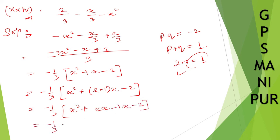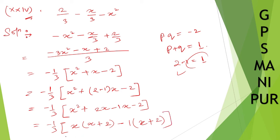So minus 1 by 3 times (x squared plus 2x minus x minus 2). Take x common from the first two: x(x plus 2). Take minus 1 common from the last two: minus 1(x minus 1) — wait, minus 1(x plus 2). Take (x plus 2) common: minus 1 by 3 times (x plus 2)(x minus 1). This is your answer. Thank you so much. This is our last question and we will meet in the next video.